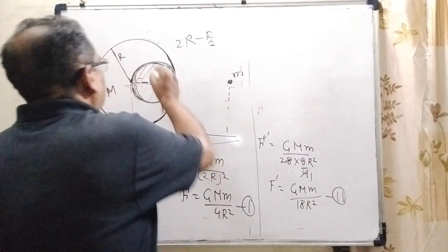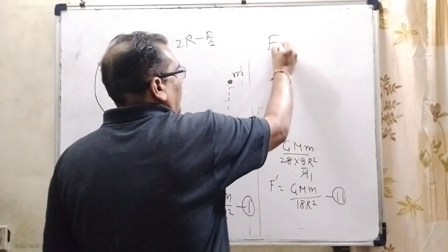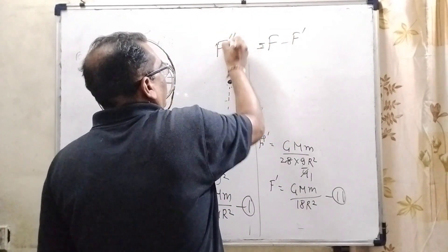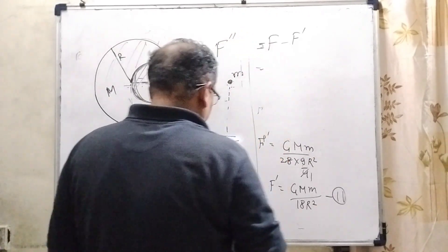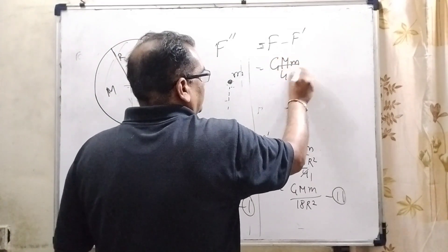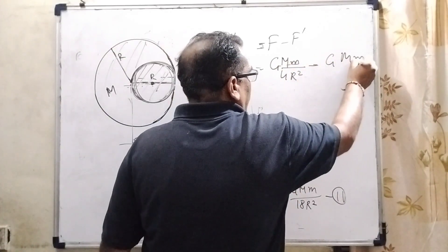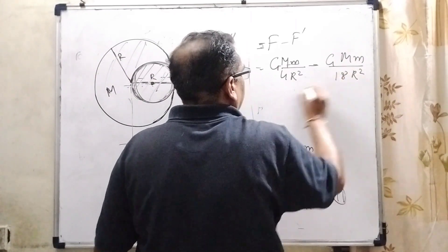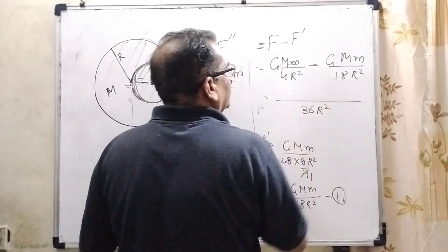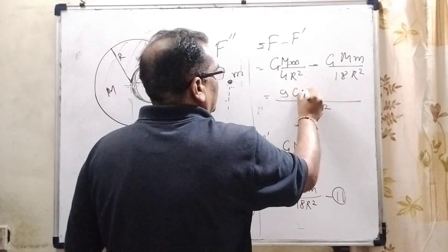Now we have to calculate the force of attraction of this body. How we can calculate? F original F minus F dash. Then remaining force of attraction. So here we have to calculate F double dash. What is F? We have already calculated G capital M small m by 4R square minus G capital M small m.